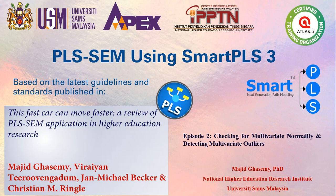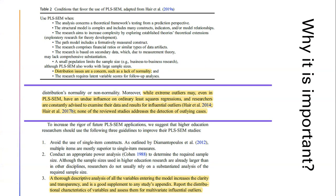Hello everybody, I hope you are fine. In this video I'm going to show you how you can check for multivariate normality and detect multivariate outliers in PLS-SEM analysis. You can apply the PLS-SEM method when your data is not multivariate normal, and if this is the case you must provide evidence for that. Identifying and removing multivariate outliers from the dataset is one of the very important steps in data screening.